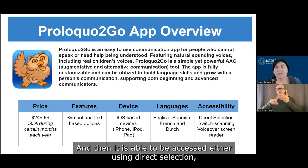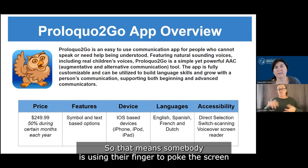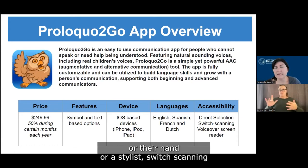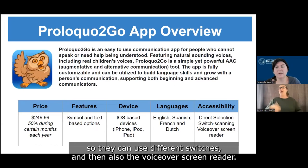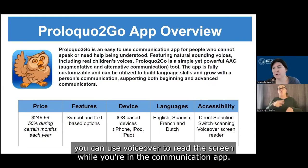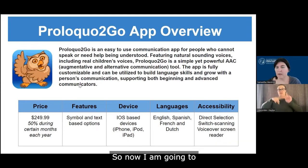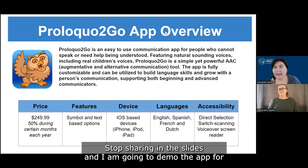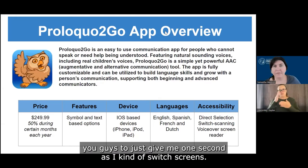It is able to be accessed using direct selection — so that means somebody is using their finger to poke the screen or their hand or a stylus — switch scanning, where they can use different switches, and also the voiceover screen reader. So if somebody has some visual challenges, you can use voiceover to read the screen while you're in the communication app. So now I am going to stop sharing the slides and demo the app for you guys.